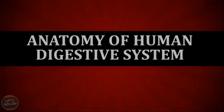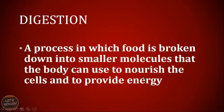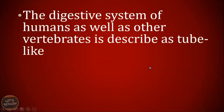Let's move on to the next review of this day, and that is the Anatomy of the Human Digestive System, a very easy topic to discuss. Remember, when it comes to digestion, it's a process in which food is broken down into smaller molecules that the body can use to nourish the cells and to provide energy. As you eat food, it cannot be used by the body right away, so it has to change into smaller molecules for the body to convert it into energy.